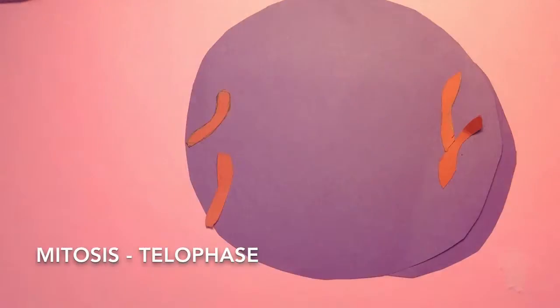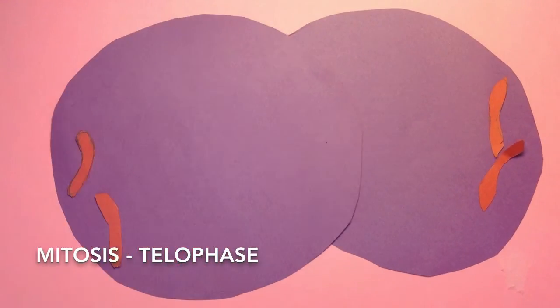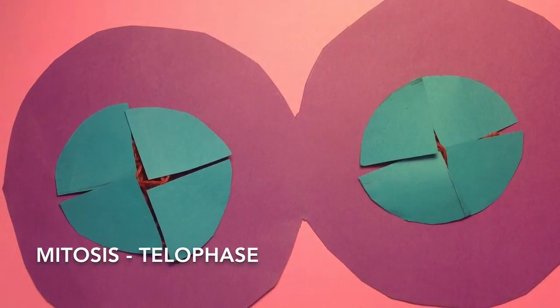During G2 phase, a new membrane forms around each cell of the chromosomes. The chromosomes also become less tightly coiled.